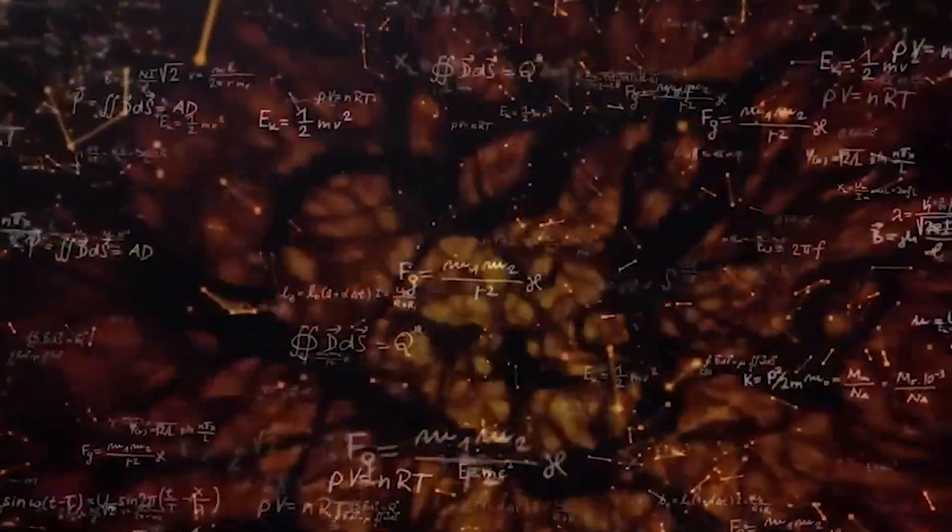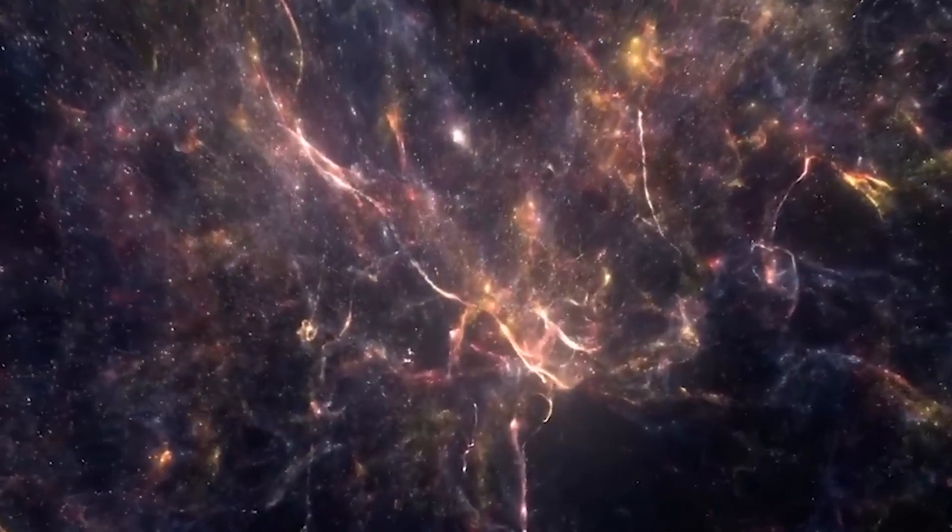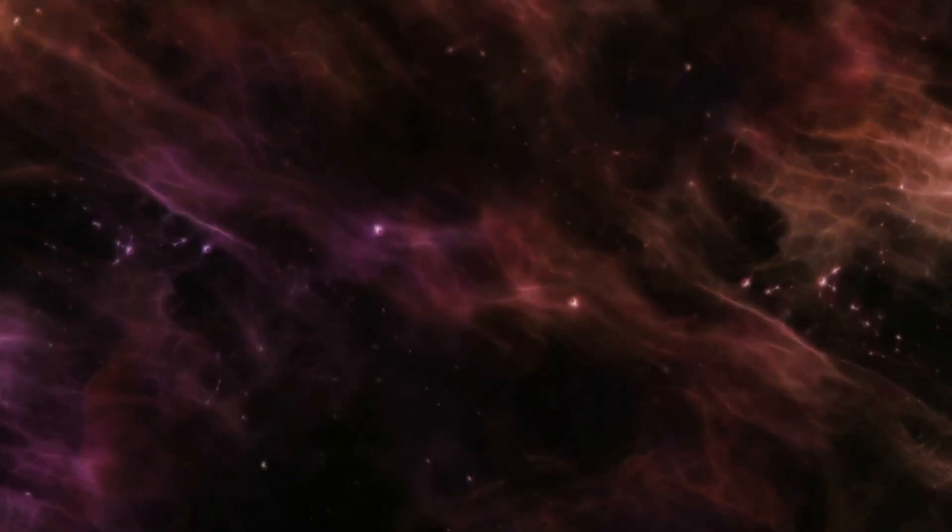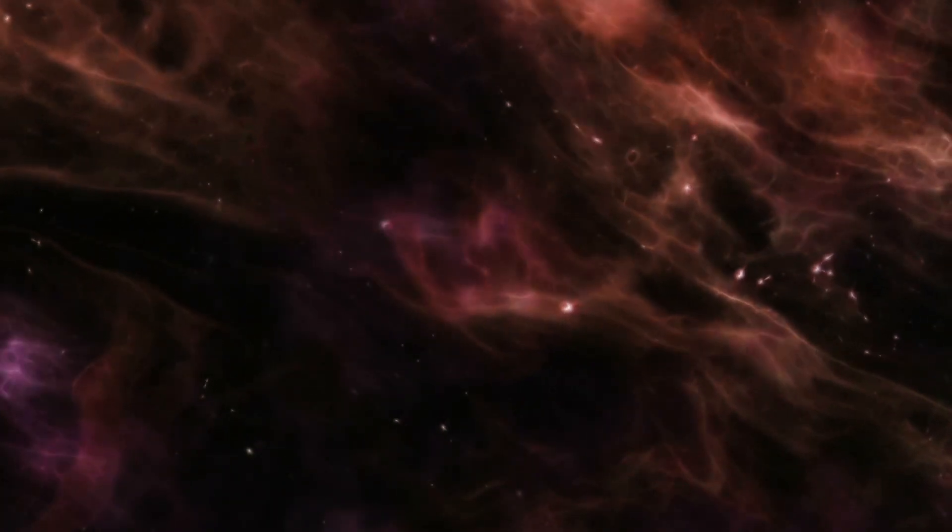For decades, many simulations focused mainly on dark matter, since it makes up most of the universe's mass. Regular matter, baryonic matter, the stuff that makes stars, planets, and us, was often treated as an afterthought. But baryons, despite being only about one-fifth of the total mass, can dramatically reshape the universe on small scales. Winds launched by supermassive black holes, explosive supernovas, and the chaotic feedback inside galaxies can all reshape matter distribution in ways we can no longer ignore.